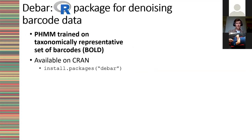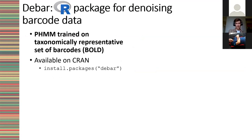Using that, I developed the R package dbar — short for denoising barcodes. It contains a profile hidden Markov model trained on a taxonomically representative set of barcodes from the BOLD database, and the package is currently available on CRAN so you can install it as you would any other R package.